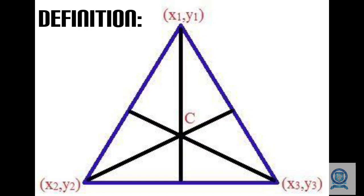Actually, what is called a centroid? For a circle it is the center of the circle. For a square it is the diagonal joining point, and for a triangle it is the median joining point. We can further explain in detail what centroid means.